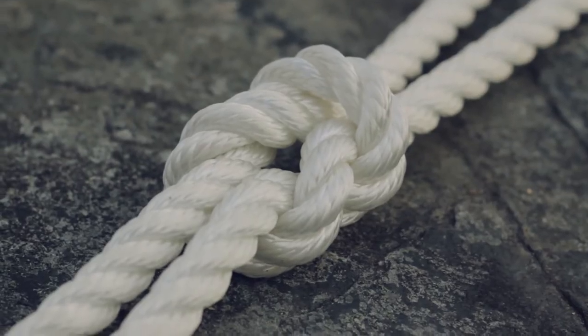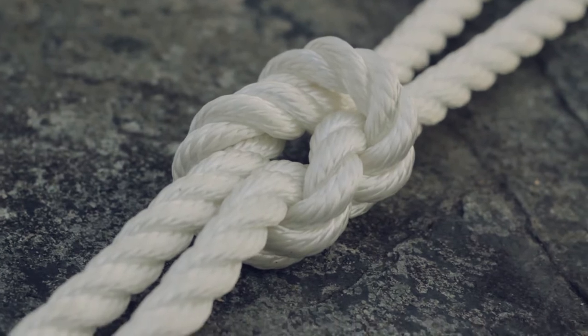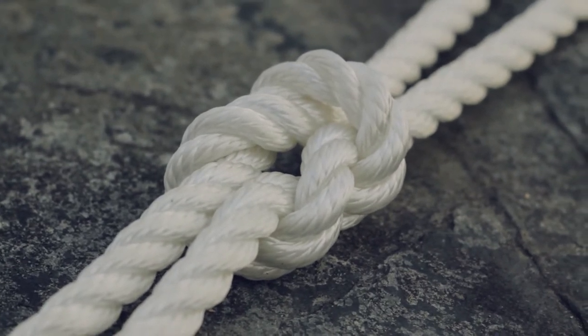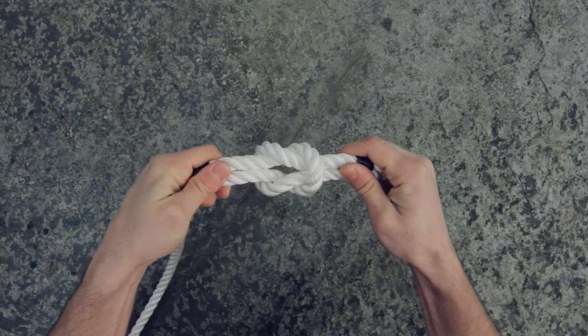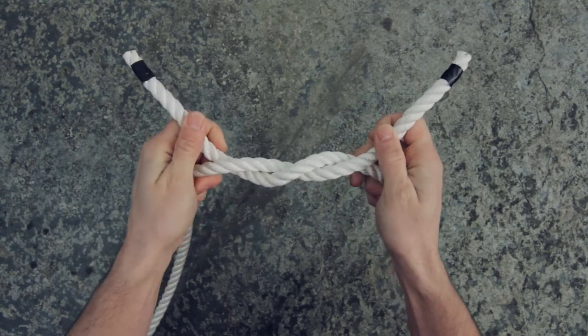The reef knot is an elegant and simple knot, great for tying two ends of rope together and it's really easy to untie. Just push the cords towards the knot on either side and the whole thing should come loose.